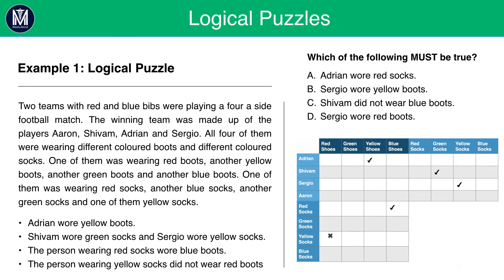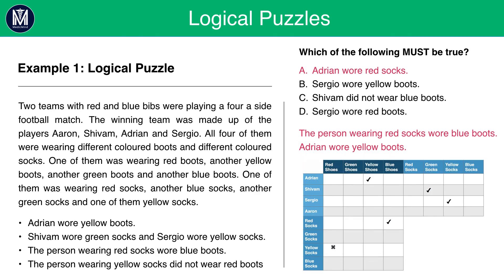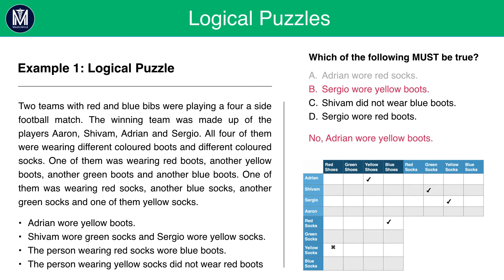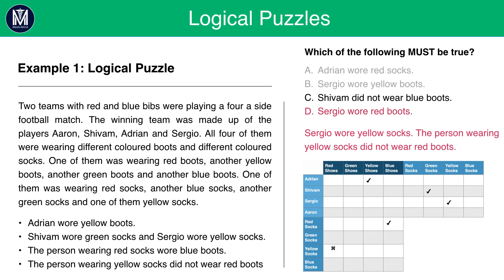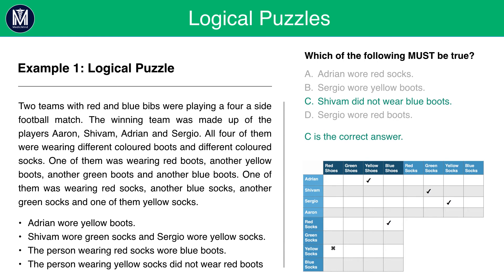Looking at each statement individually using the crosshatch table: Adrian wore red socks is false, because the person wearing red socks wore blue boots and Adrian wore yellow boots. Sergio wore yellow boots is false because Adrian wore yellow boots. Shivam did not wear blue boots is the correct answer — C. You can see how you can gain all this information just by looking at the crosshatch table. Have a look at both the fill-in method and the crosshatch method and find out which one suits you more.